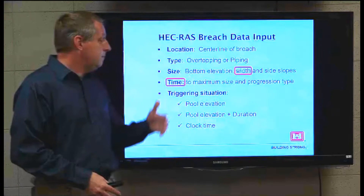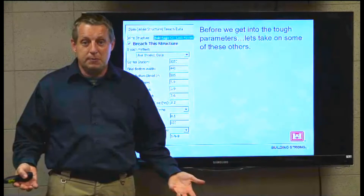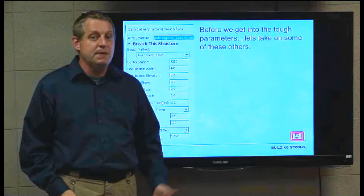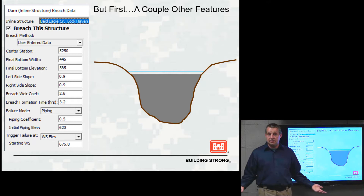Right under that you have your dam breach method, and that's where these three different methods come in. Not all parameters are hard — some you can pull right off the specs, like the center station, the final bottom elevation, and even the breach coefficient. There are really two parameters that are hard: the final bottom width and how long it's going to take to breach.